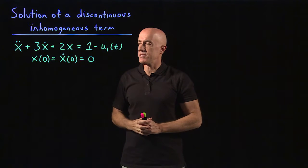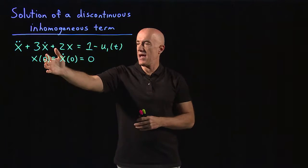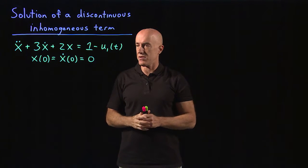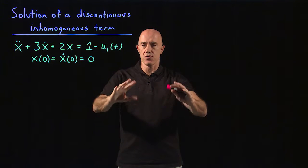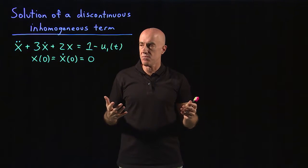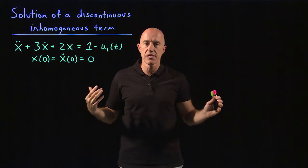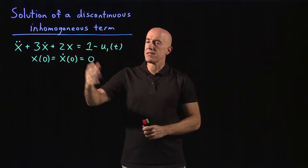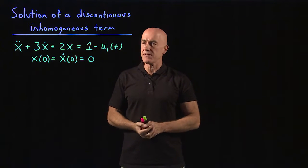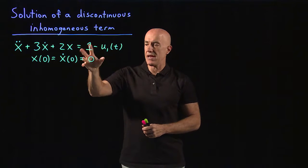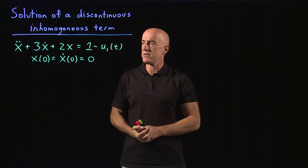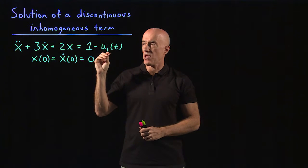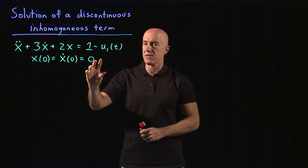We have initial conditions: x of 0 equals 0 and x dot of 0 equals 0. So the initial force is causing this object to move with some velocity, and then you release the force. This is an ideal problem to use the Laplace transform method because the right hand side is discontinuous. So let's go to the table and apply the table to take the Laplace transform of this equation.